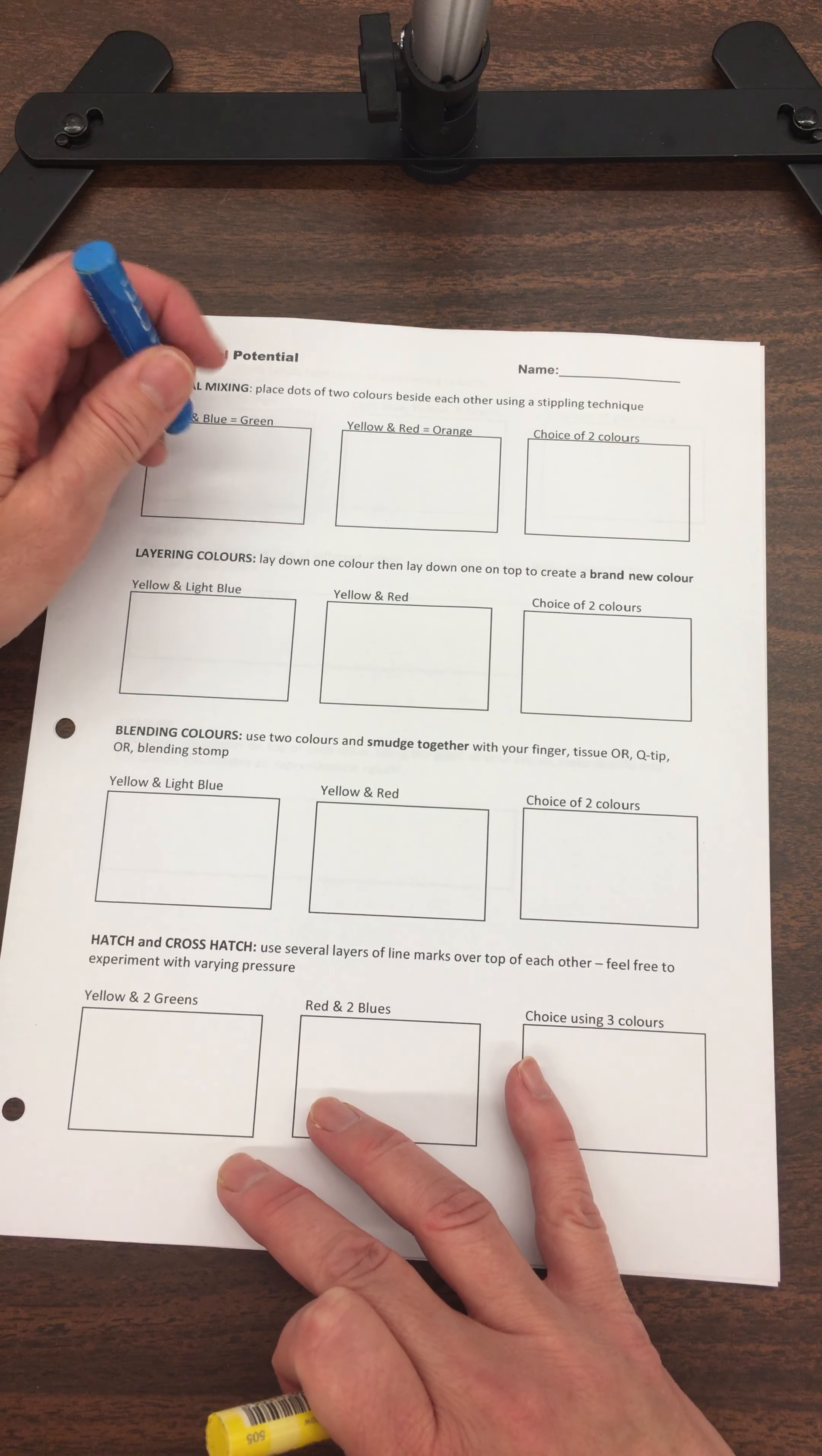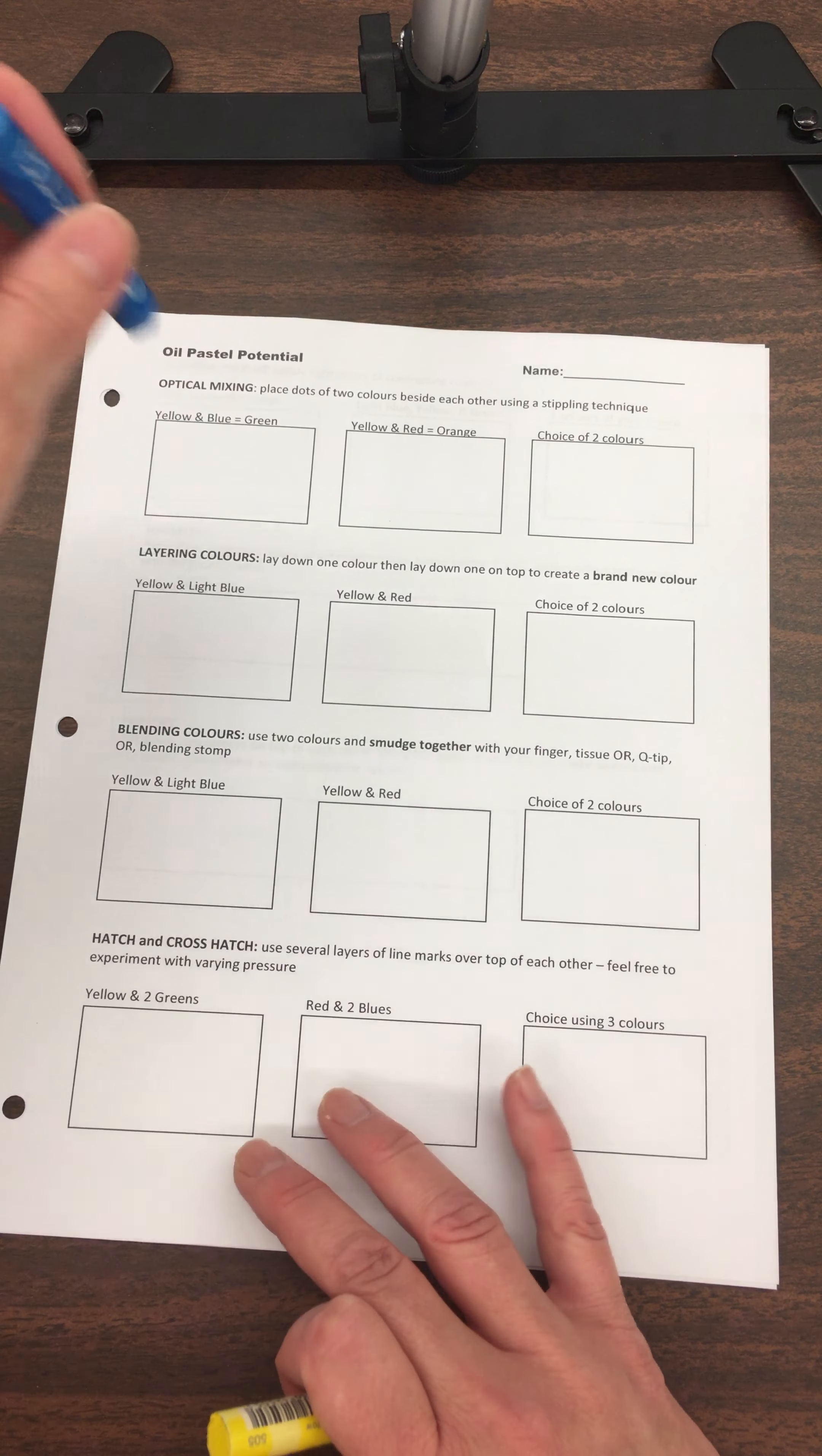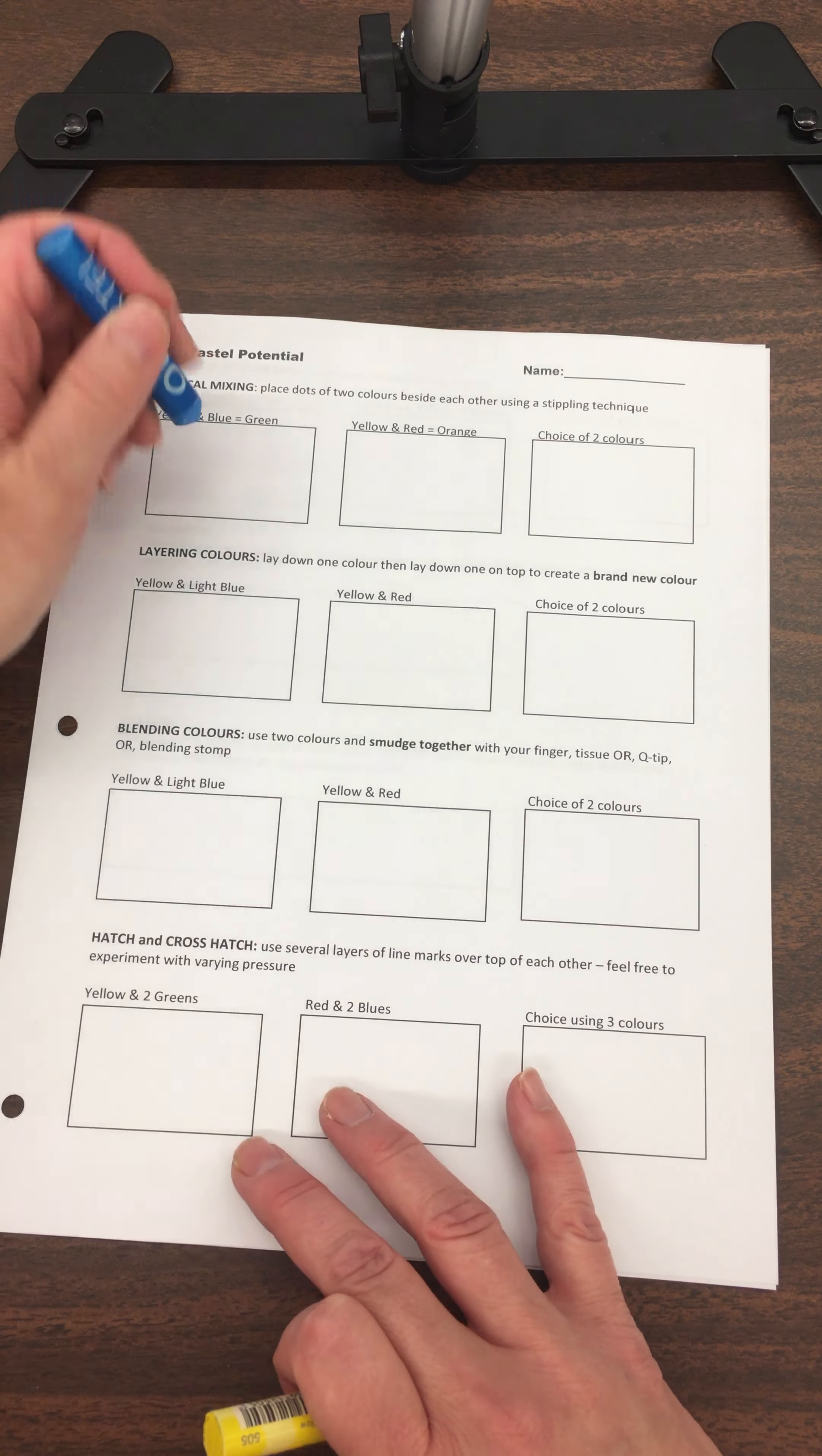We understand stippling from work with scratchboard. The idea is when you place colors together next to each other, they eventually sort of mix in the eye, and that's why it's called optical mixing.